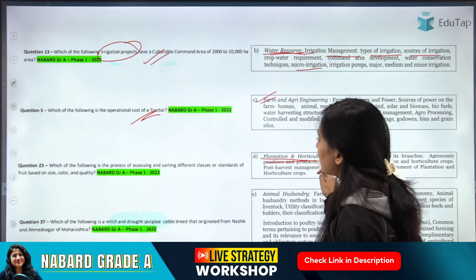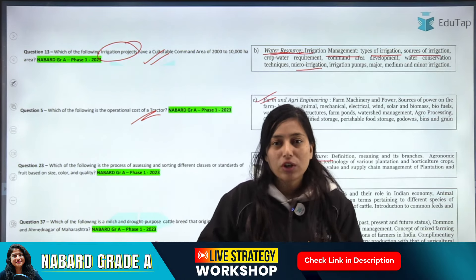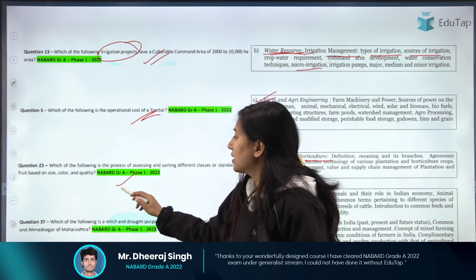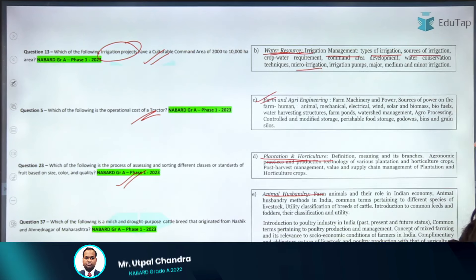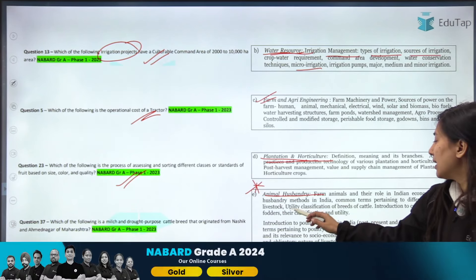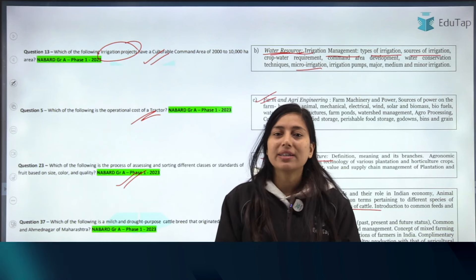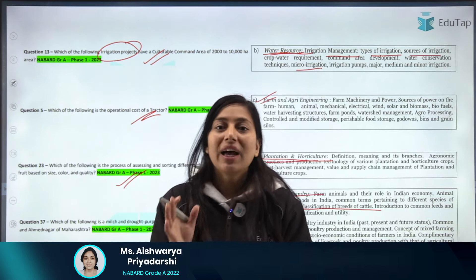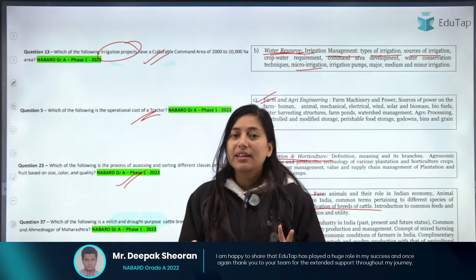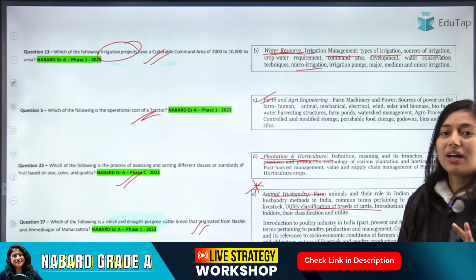When you study plantation and horticulture crops, you will learn about the processing part — grading, packaging, packing, the basis on which grading is done — and questions come from grading. Then, animal husbandry is a very important chapter. You need to cover the utility classification of breeds of cattle. Classification is very important — questions usually come from important and common breeds. You have to cover cattle, buffalo, sheep, goat, and poultry breeds, because most questions in animal husbandry come from the breed section.